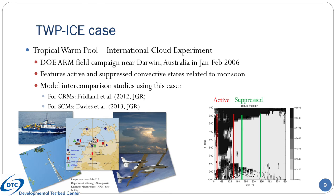The first case is based on the TWP-ICE field campaign, which stands for Tropical Warm Pool International Cloud Experiment. The field campaign was undertaken by the DOE ARM program and took place near Darwin, Australia in January-February of 2006. It was sampled by both remote and in-situ measurement platforms, both over the ocean and land. Using observations from these platforms, a case for both LES and single-column models was created that features both active and suppressed convective states related to the local monsoon. Papers by Fridlind and co-authors and Davies and co-authors in JGR are excellent resources.